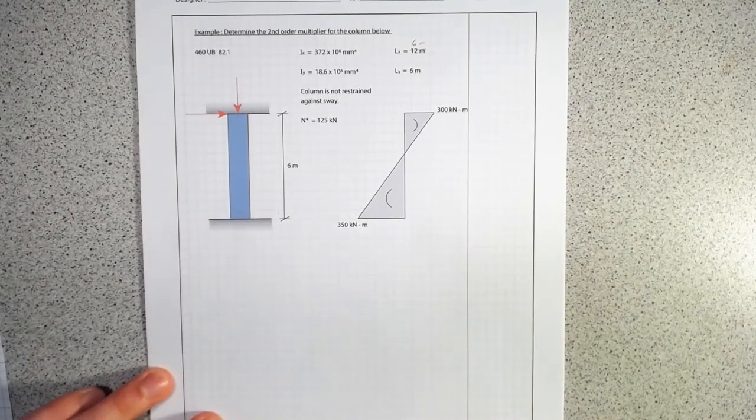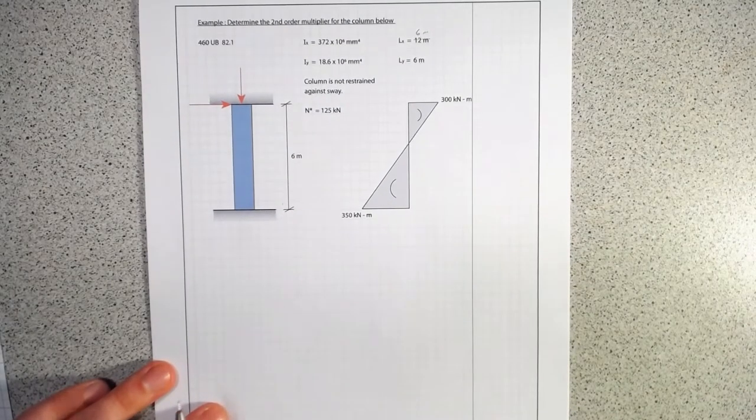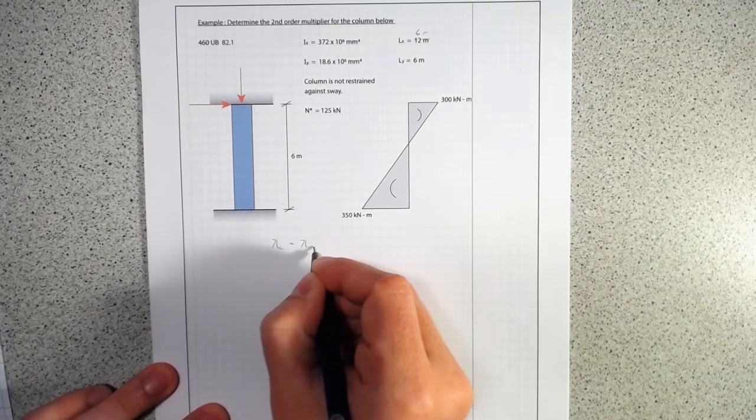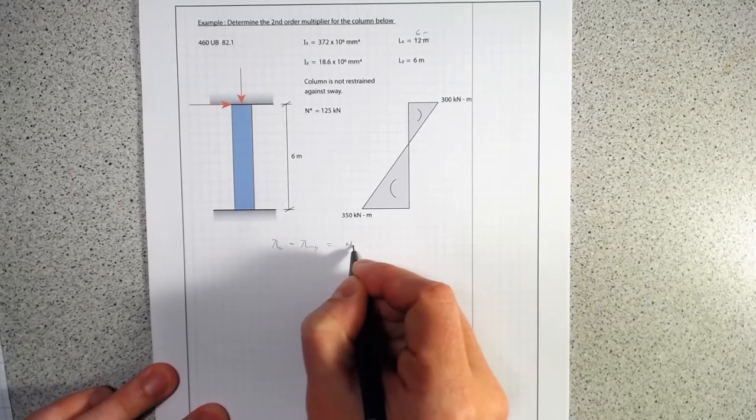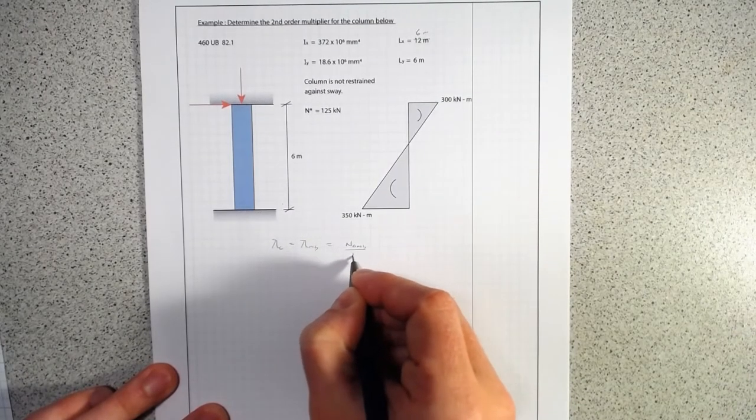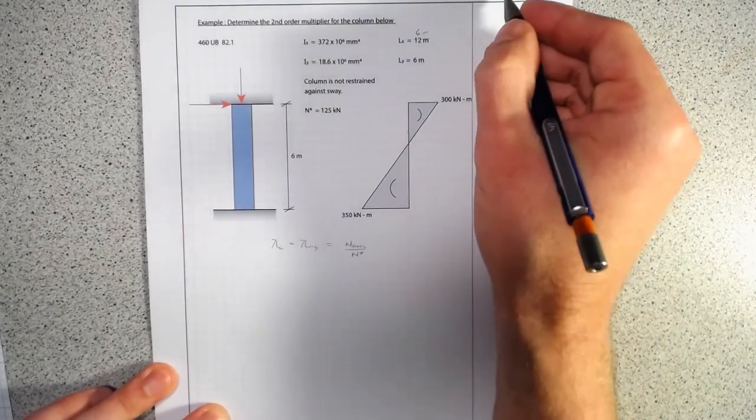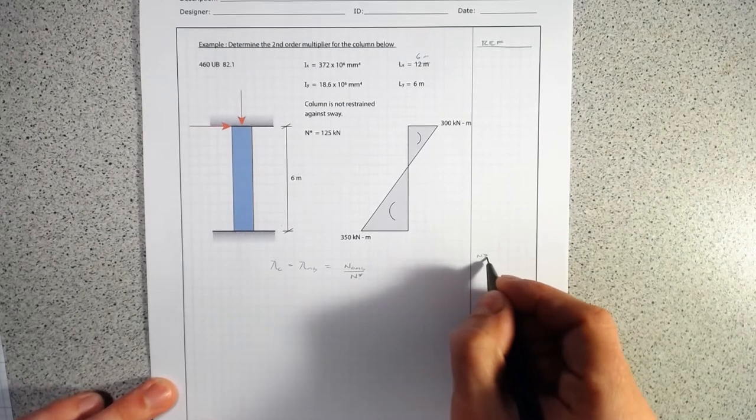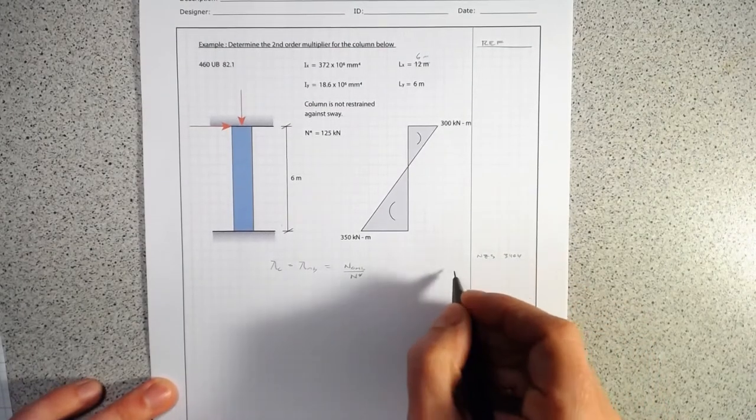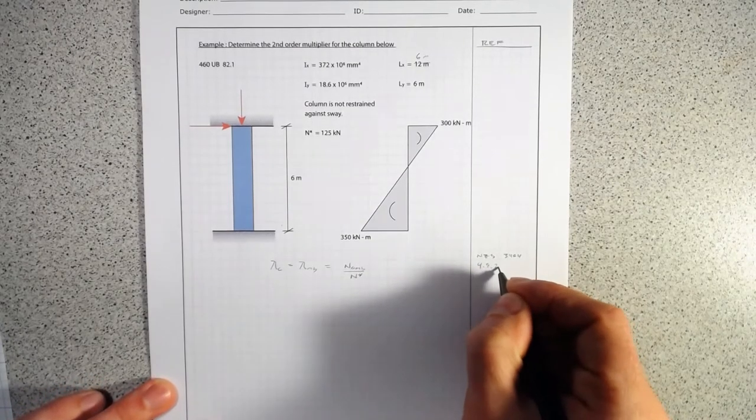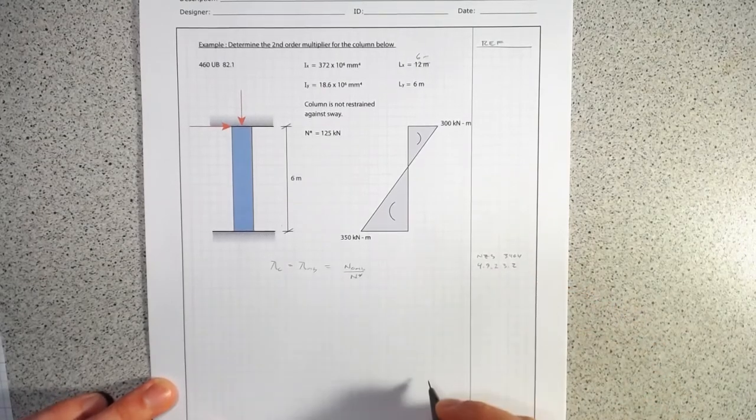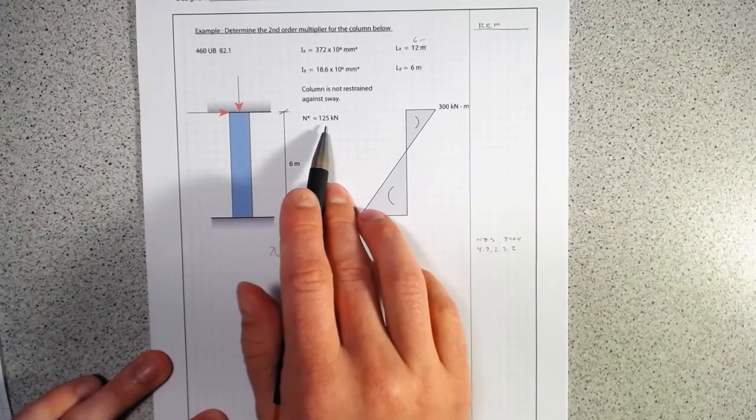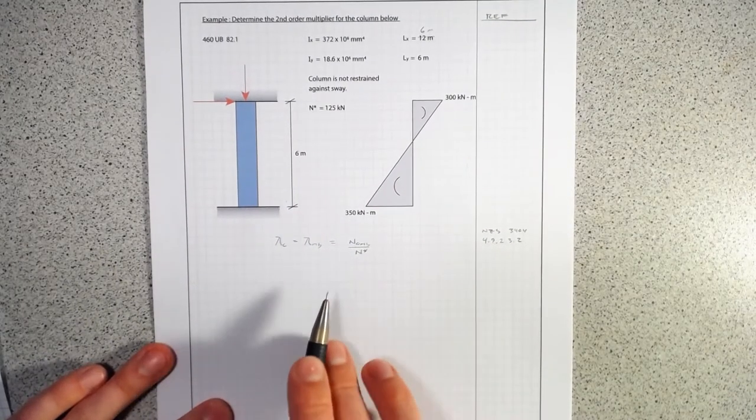As we go through, the first thing we need to do is determine if we even need to apply our second order multipliers by looking at our Lambda C. Lambda C equals Lambda MB equals the nominal buckling capacity over N star. This is coming from NZS 3404 section 4.9.2.3.2. N star is 125.